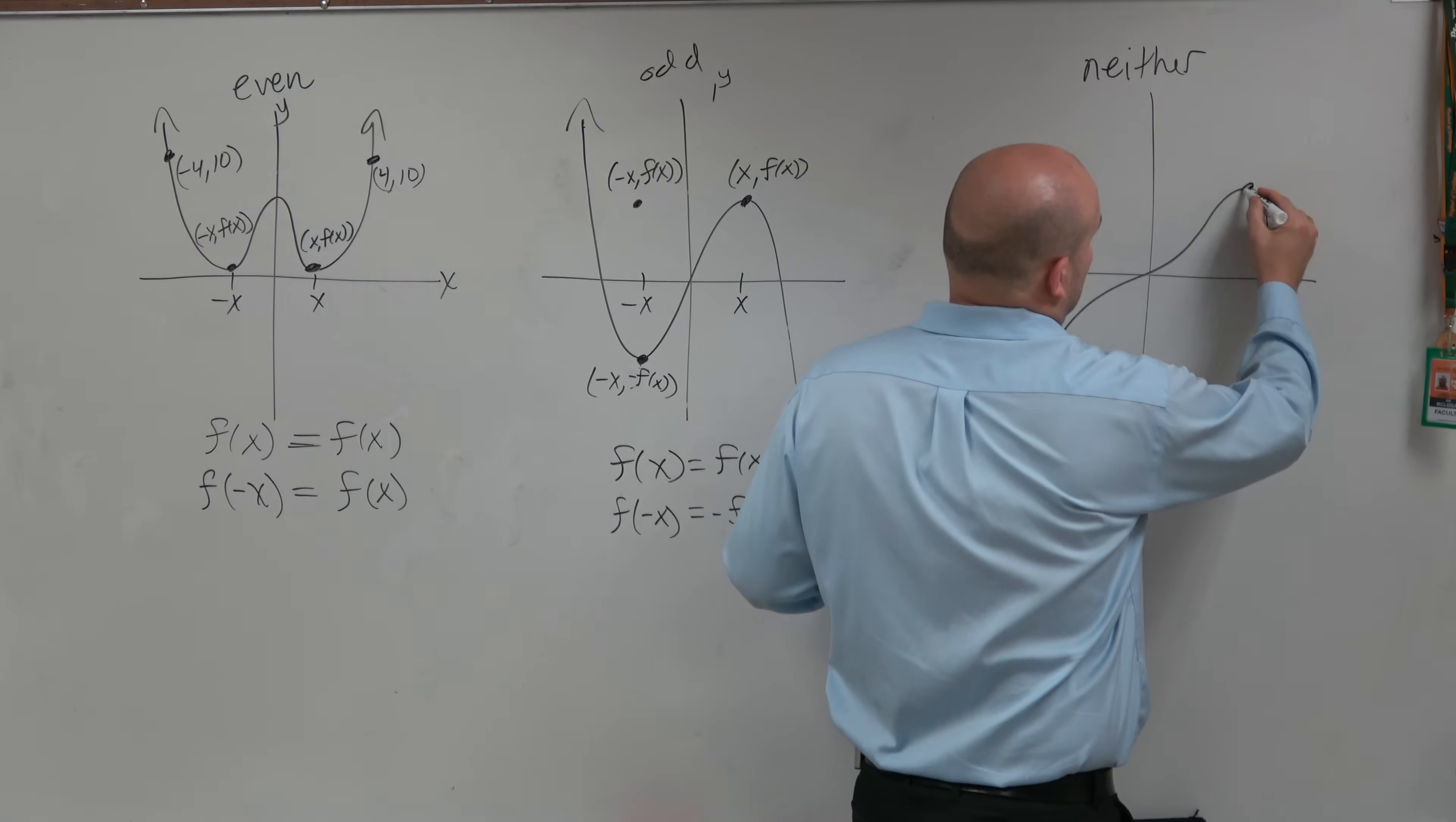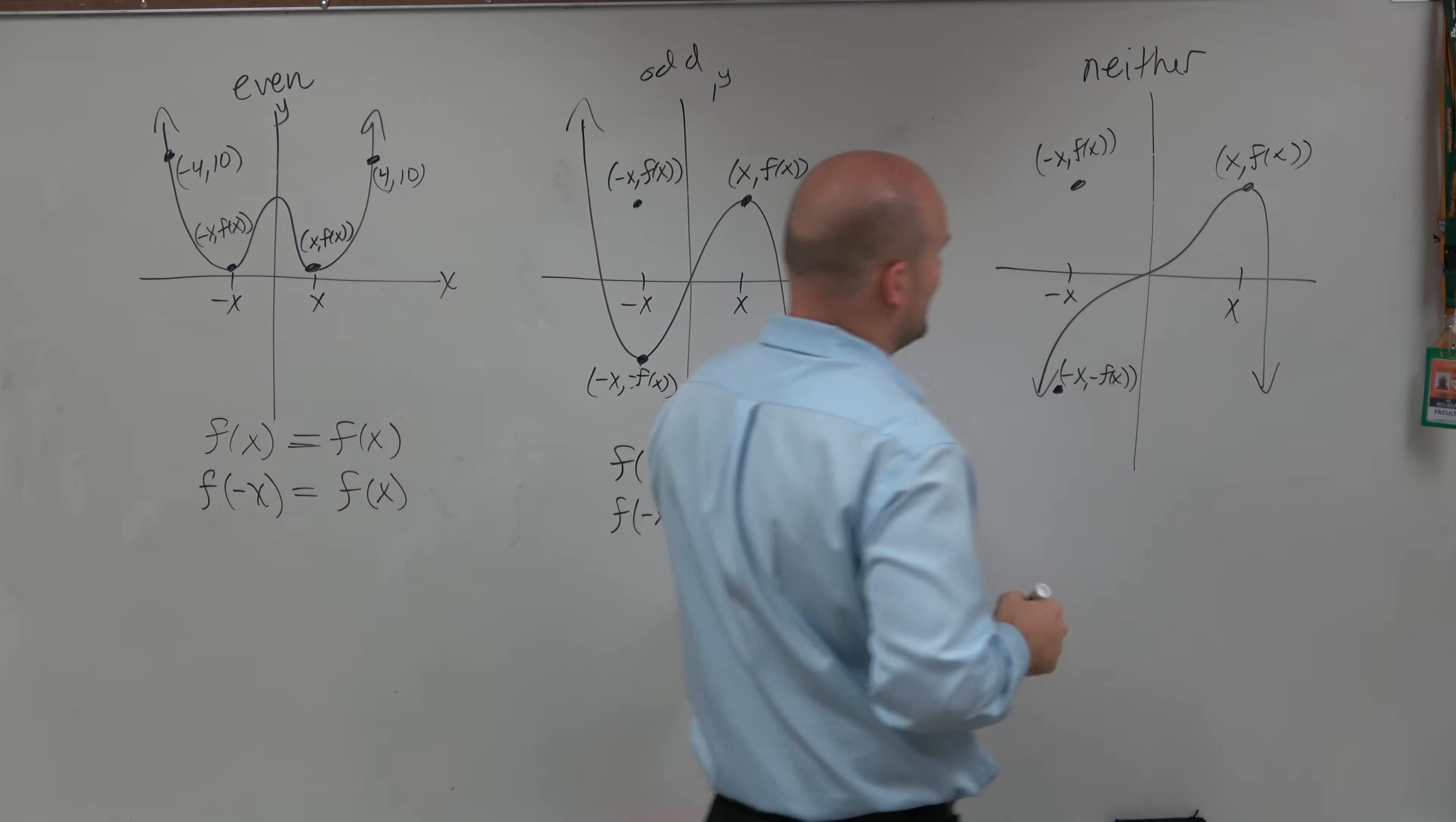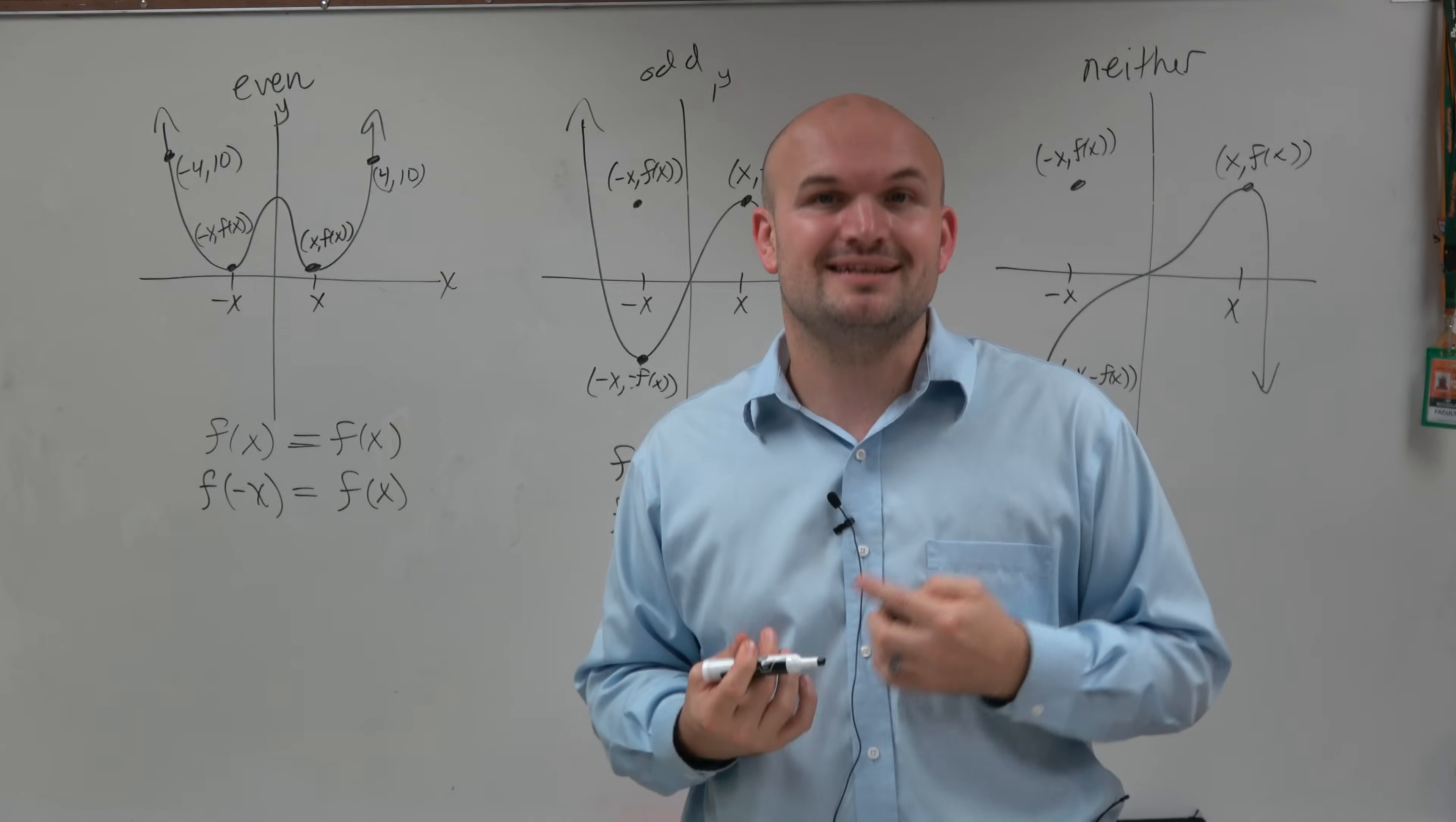So a neither kind of works both ways. A neither is kind of like the exact same thing, but there's just no symmetry. If I reflect this over negative x, there's no point here, and there's no point over here. Negative x comma f of x, that's if it was even. And negative x comma opposite of f of x, that'd be if it's odd. So if you were to plug in f of negative x and you don't get f of negative x and you don't get f of x, but you get some other random function, it's going to be really close but just one negative sign off, it's going to be neither.